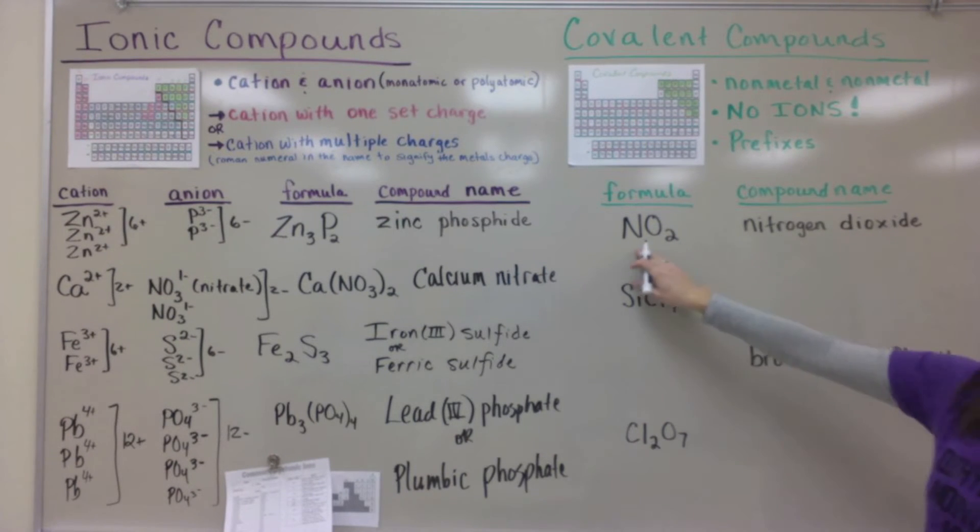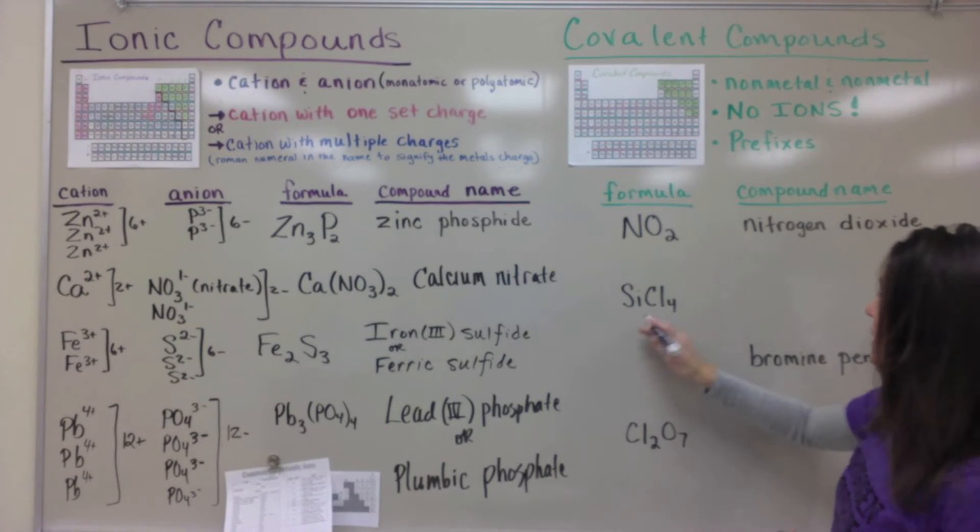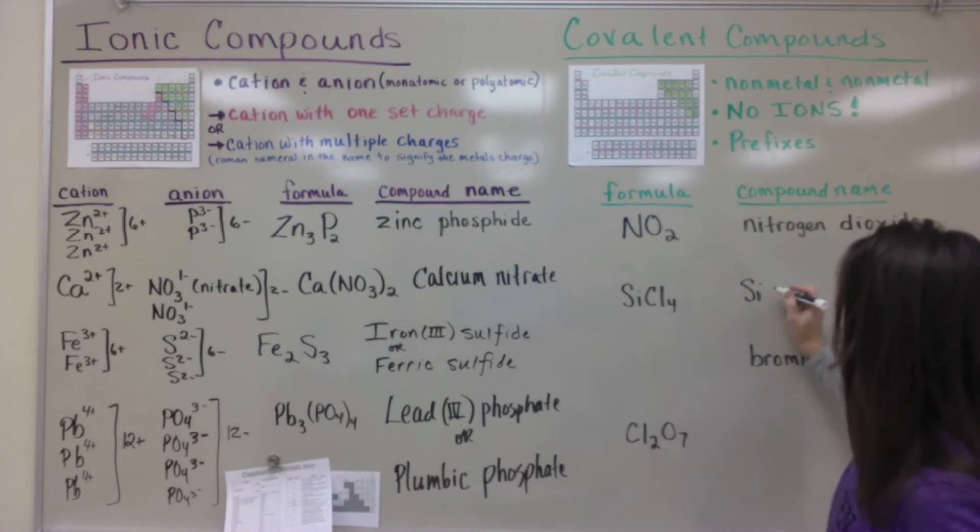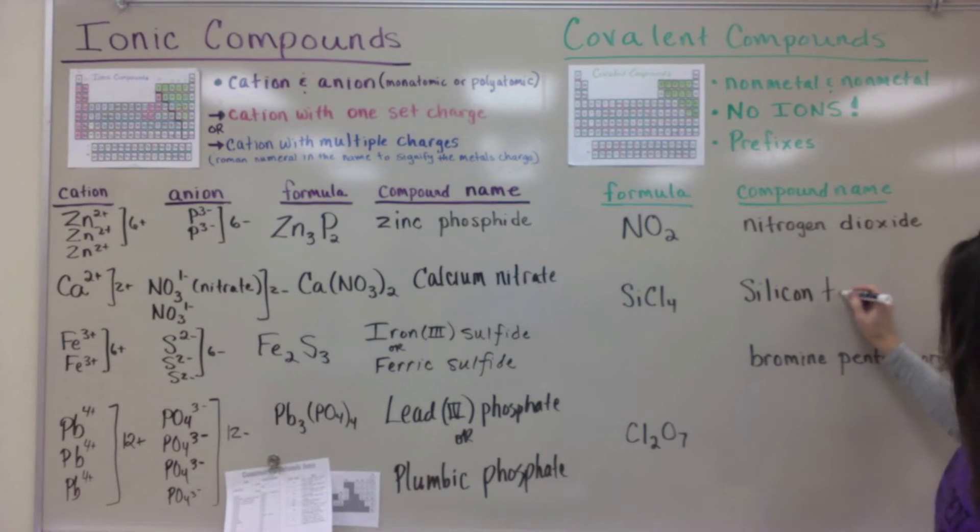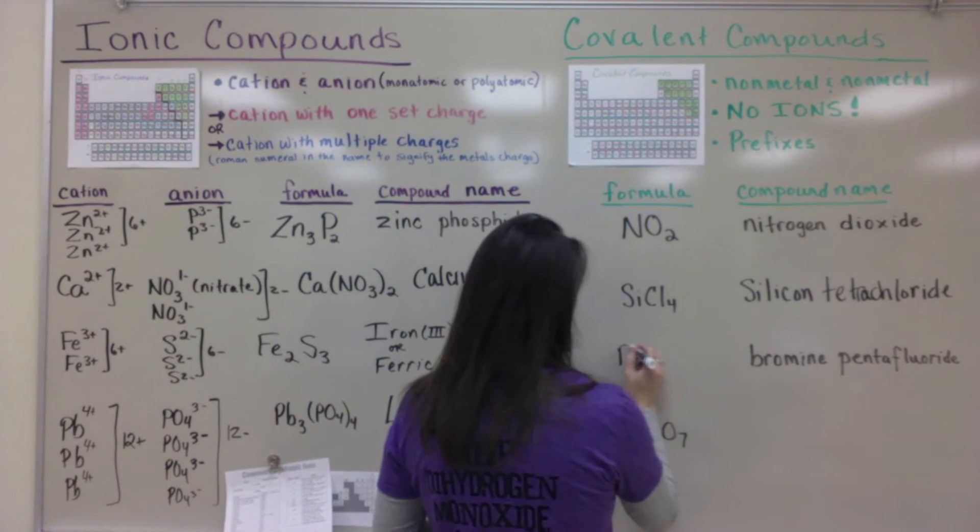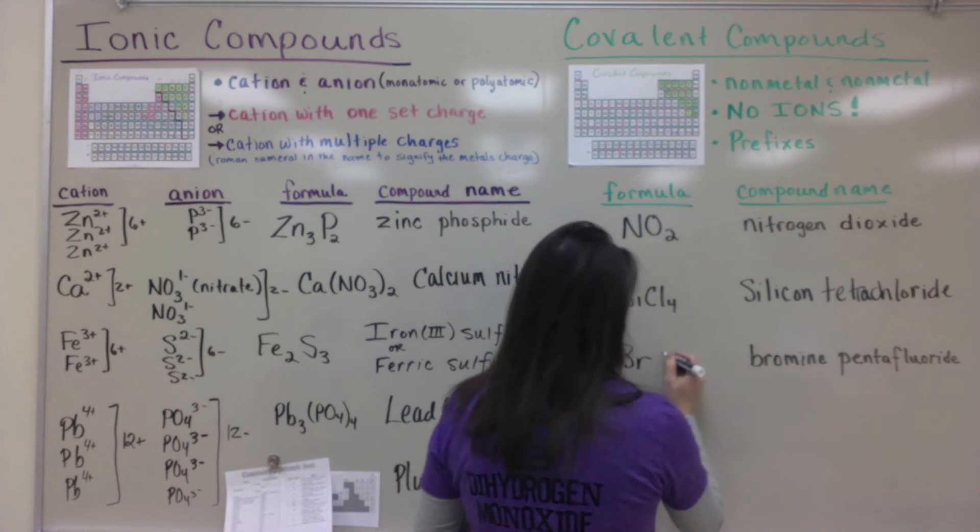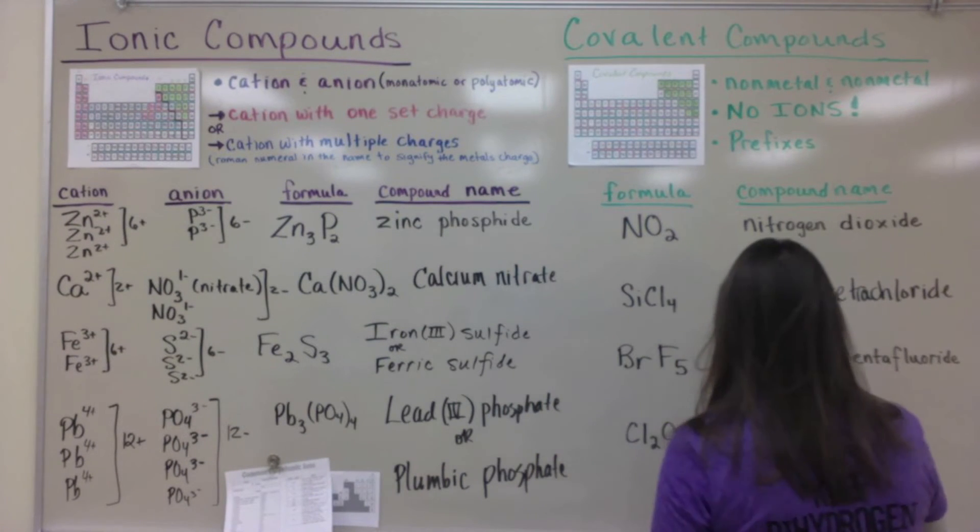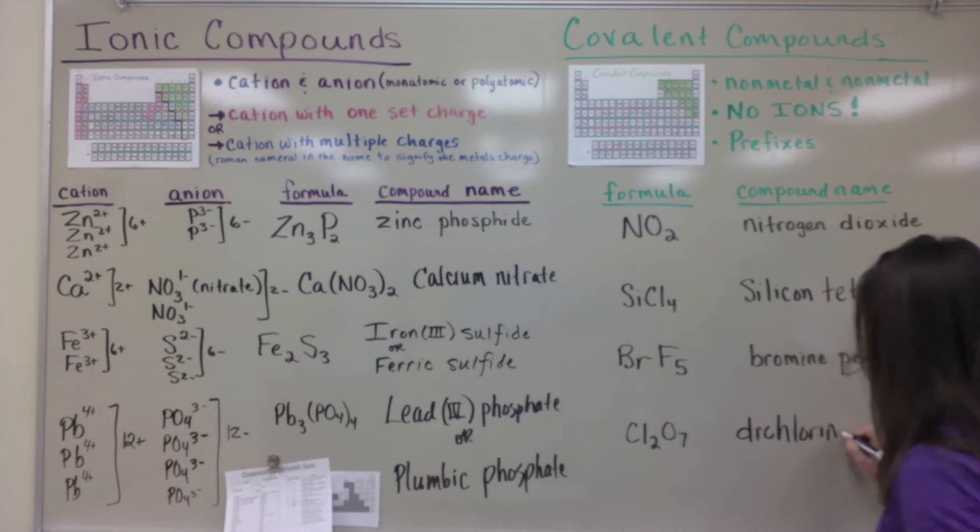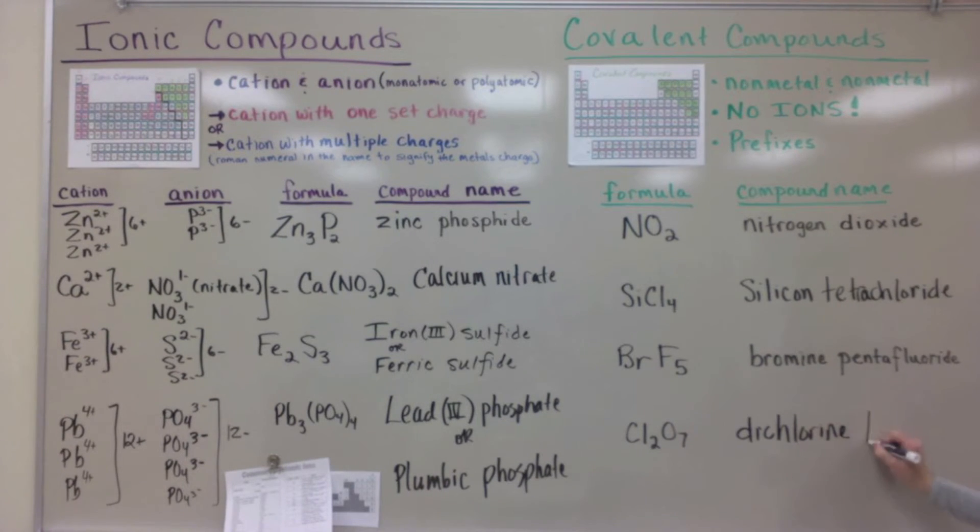So nitrogen dioxide is nitrogen and two oxygens. Silicon with chlorine here is tetrachloride because there are four chlorines in there and then you'd say chloride. The next one we have bromine and then pentafluoride means five of those fluorines. The last one is two chlorines so dichlorine you don't change the name of the first one. And then heptoxide for seven oxygens.